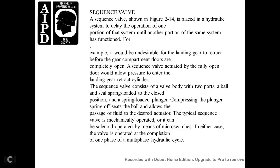Sequence Valve. The sequence valve shown in figure 2-14 is placed in the hydraulic system to delay the operation of one portion of a system until another portion of the same system has functioned. For example, to prevent the landing gear from retracting before the gear compartment doors are completely open, the sequence valve will actuate the fully open door before allowing pressure to enter the landing gear retract cylinder. The sequence valve consists of a valve body, two ports, a valve and seal, a spring-loaded piston, and a spring-loaded plunger. Compressing the plunger off the valve seat allows fluid flow to proceed to the desired actuated component. The typical sequence valve may be mechanically operated or solenoid-operated by means of a microswitch, typically operated upon the completion of one phase of a multiple-phase hydraulic cycle.